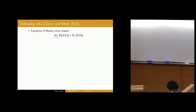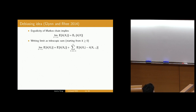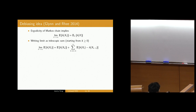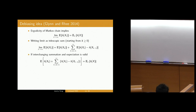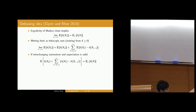This is really a de-biasing idea that comes from a paper by Glynn and Rhee. The ergodicity of the Markov chain gives us convergence of expectations to what we want as you send the number of samples to infinity. I can rewrite this limit as a telescopic sum starting at some value k, which is my tuning parameter. Assuming it's valid to interchange the order of summation and expectation — which needs justification, which is why this slide is heuristic — then I have this equality.